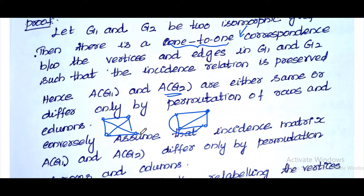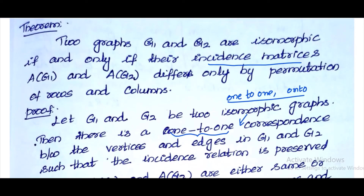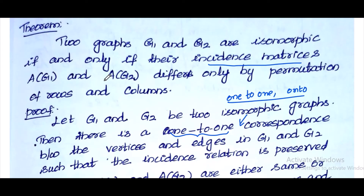The size of the rows may differ, but the rows and columns are essentially the same. Conversely, we consider the incidence matrices A(G1) and A(G2). In the converse part, A(G1) and A(G2) differ by permutation of rows and columns, and from this we prove that G1 and G2 are isomorphic.